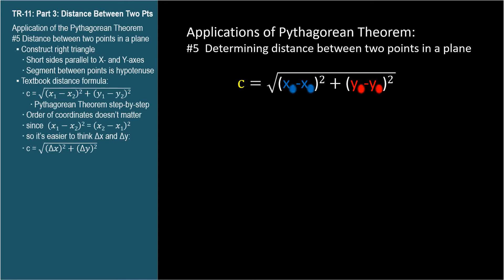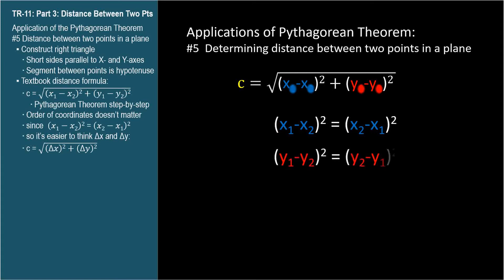Since we're squaring the differences, it doesn't matter if you take x1 minus x2 or x2 minus x1. When one of these differences is positive, the other is negative, so you get the same positive number when you square them. And of course, the same is true for the y coordinates.